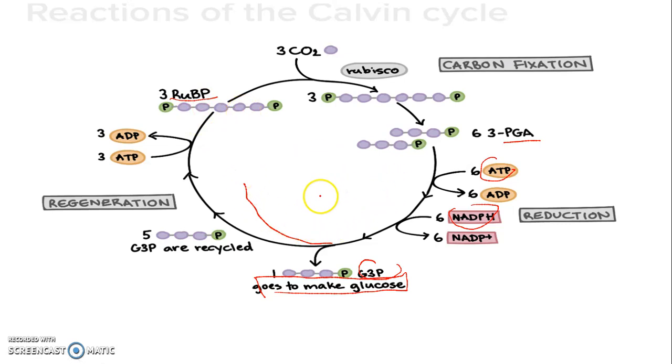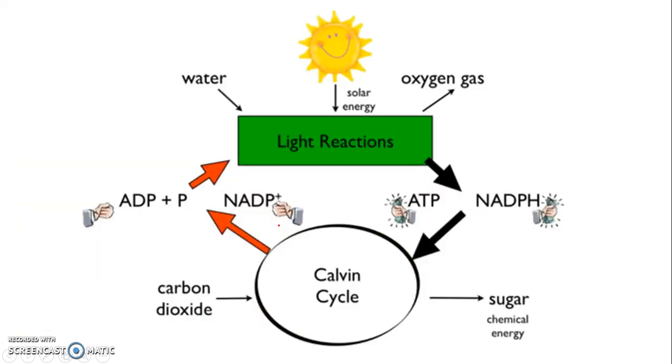So this was the Calvin cycle in which we were able to make glucose from RUBP through various steps. That was the whole photosynthesis. Now let's look at an overview of what happens in photosynthesis.